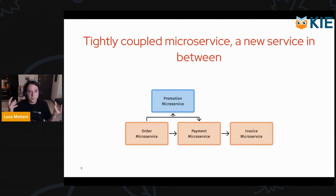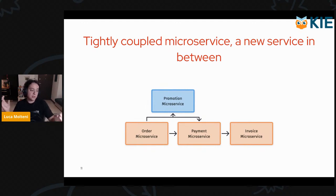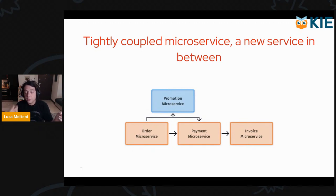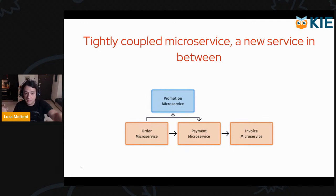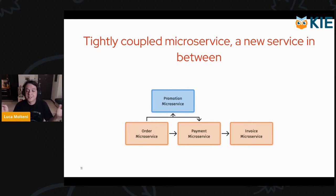When something goes wrong, you have to check the consistency of every microservice — this is called the distributed transaction problem, and it's very hard to handle with such tightly coupled components. Another problem: eventually you would want to insert a new microservice between two phases. For example, inserting a promotion microservice between the order and payment microservice. Since the orchestration logic is written inside, you have to go into each microservice and change that logic. It gets complicated because half the logic is in one microservice and half in another — definitely not a maintainable architecture.